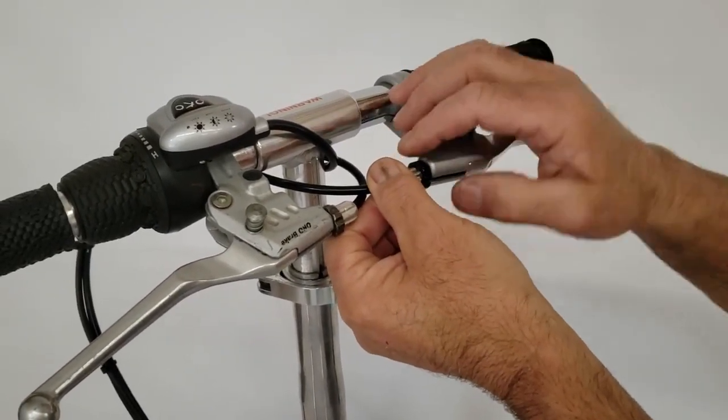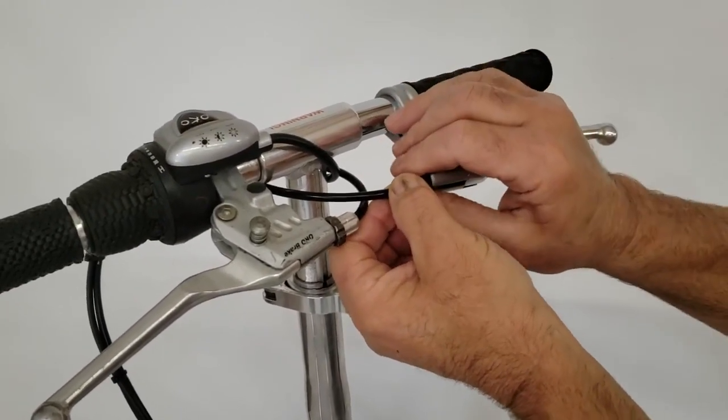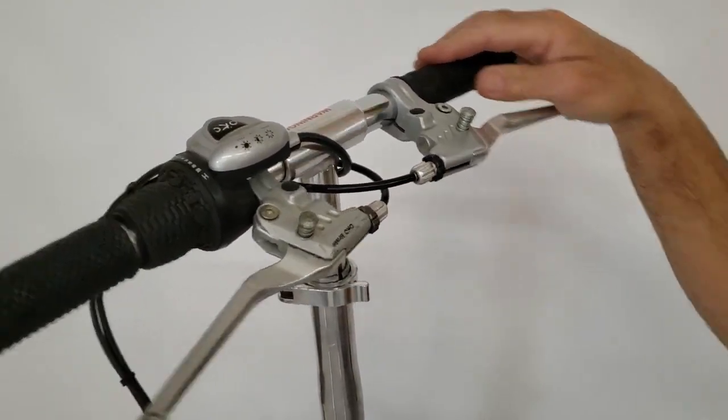And then, once you've got your proper adjustment, you tighten this lock nut again so it doesn't inadvertently, so the adjusting nipple doesn't inadvertently loosen or tighten, though that's unlikely.